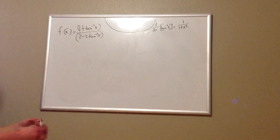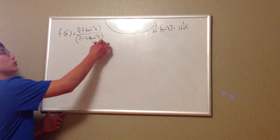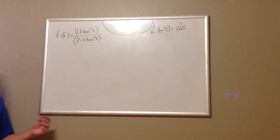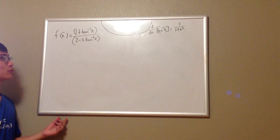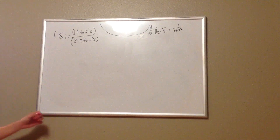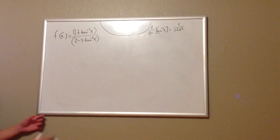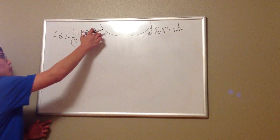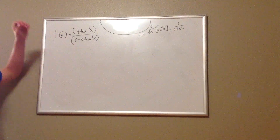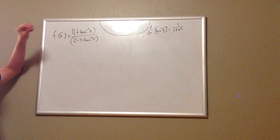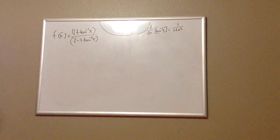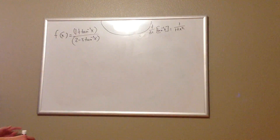A good way to remember quotient rule, if you don't already know it, is low d high minus high d low, square the bottom, and away we go. What this means is it's the denominator times the derivative of the numerator, minus the numerator times the derivative of the denominator, and then all of that over the denominator squared.